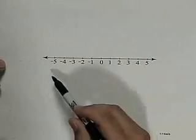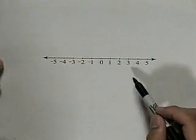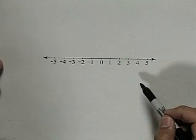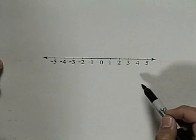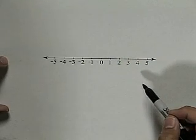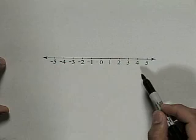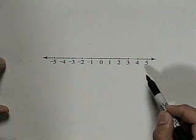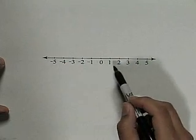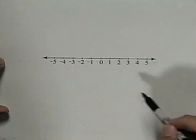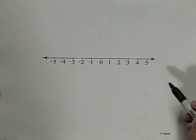The real numbers system is a system that can be shown using a number line. All coordinates on the number line match up to a real number, and all real numbers match up to a location on the number line. Here you see the integers listed out on the number line, but the numbers in between the integers are included as well in the real number system.